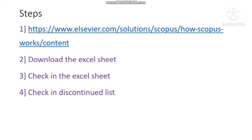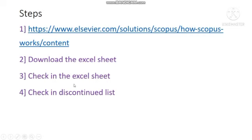Let us go to step one. We need to download the Excel sheet from the Scopus database. Step two: download the Excel sheet. Step three: check the Excel sheet — we already have the journal from Google search, so verify whether that journal is available in the Excel sheet or not. Step four: after confirming this, go to the discontinued list and ensure that the journal is not listed there.